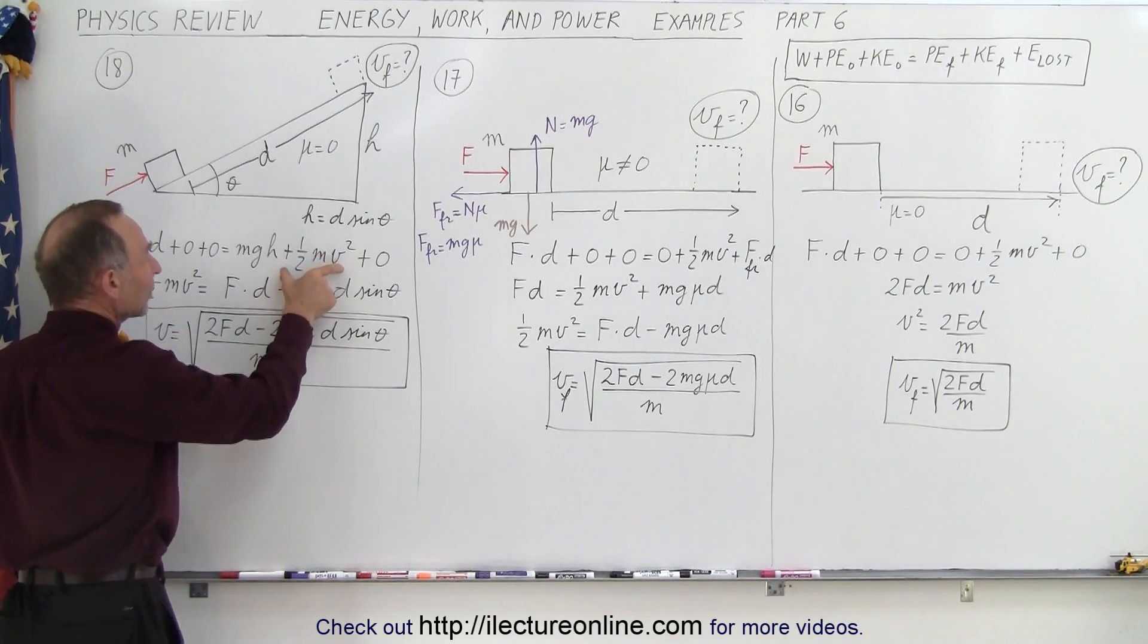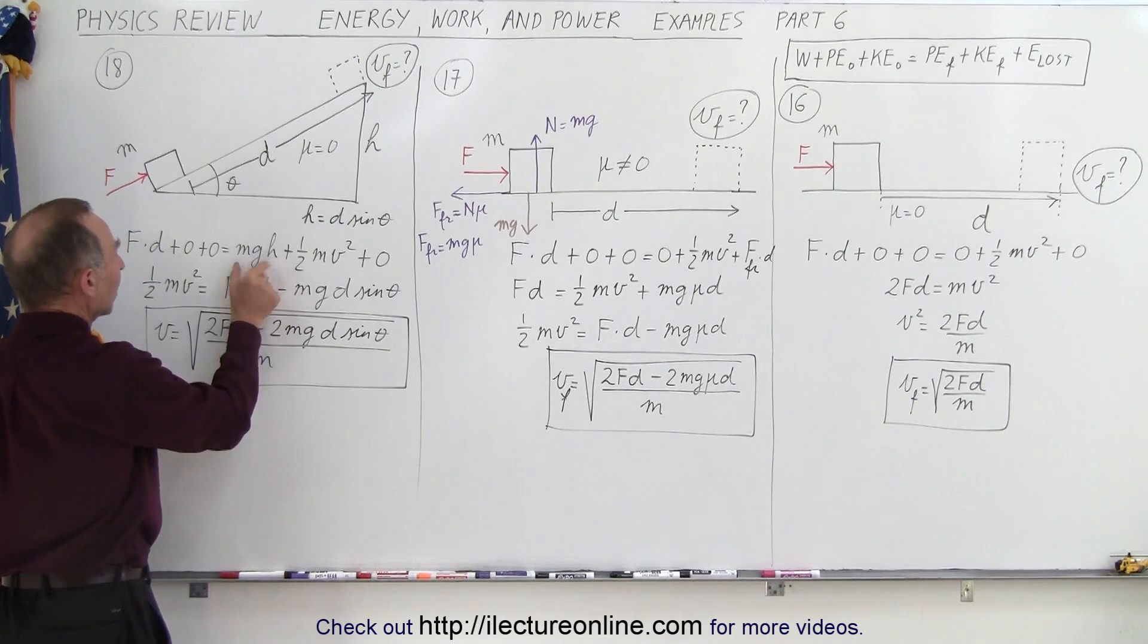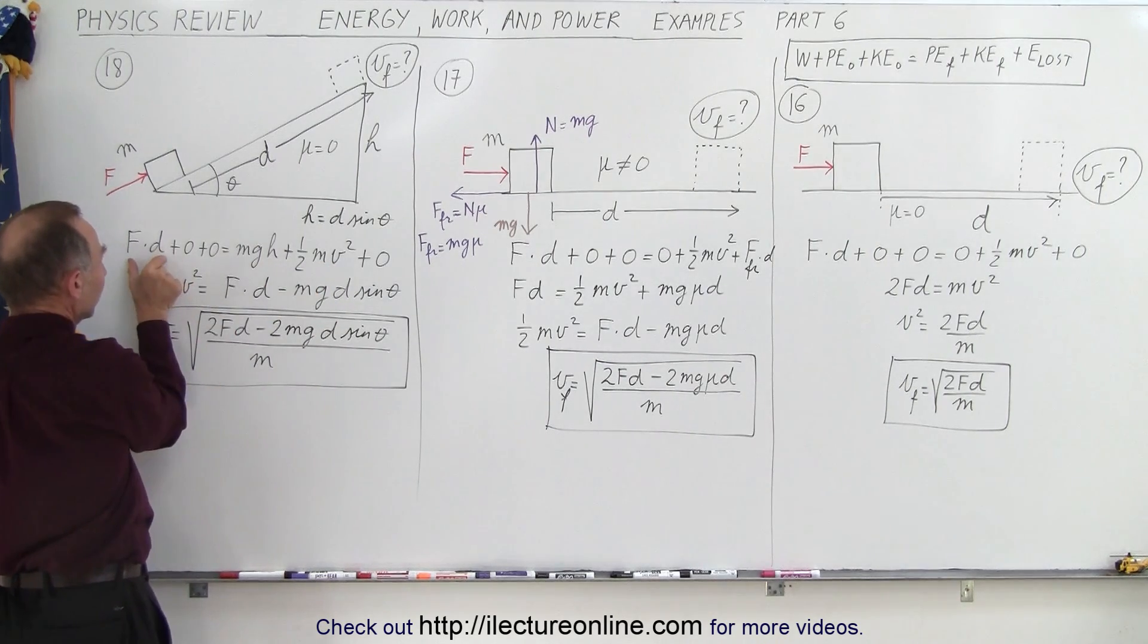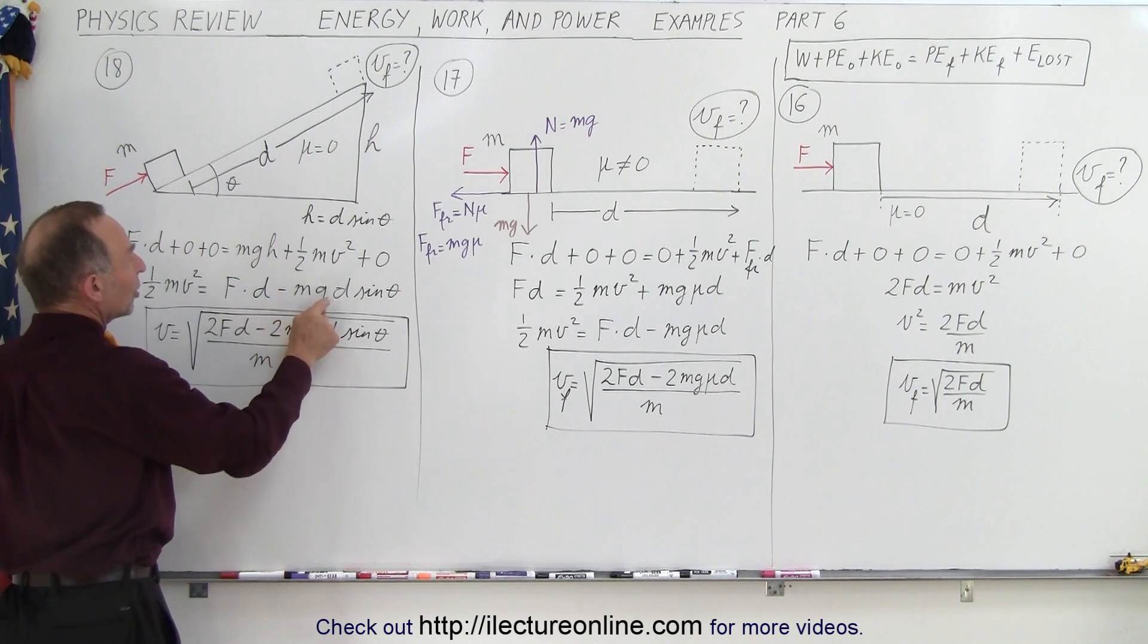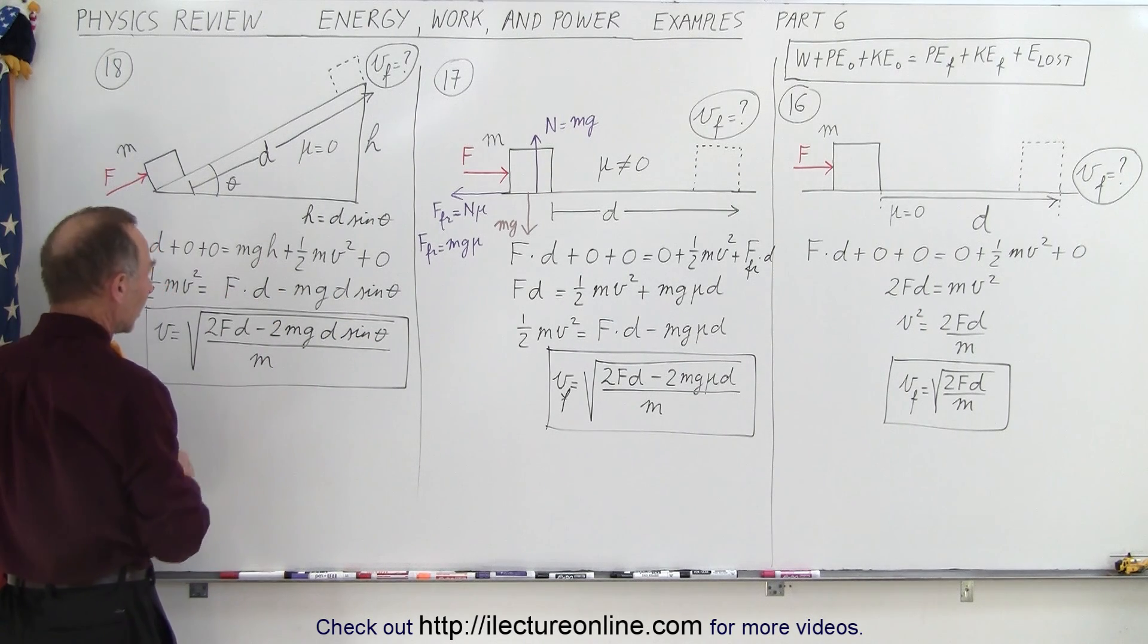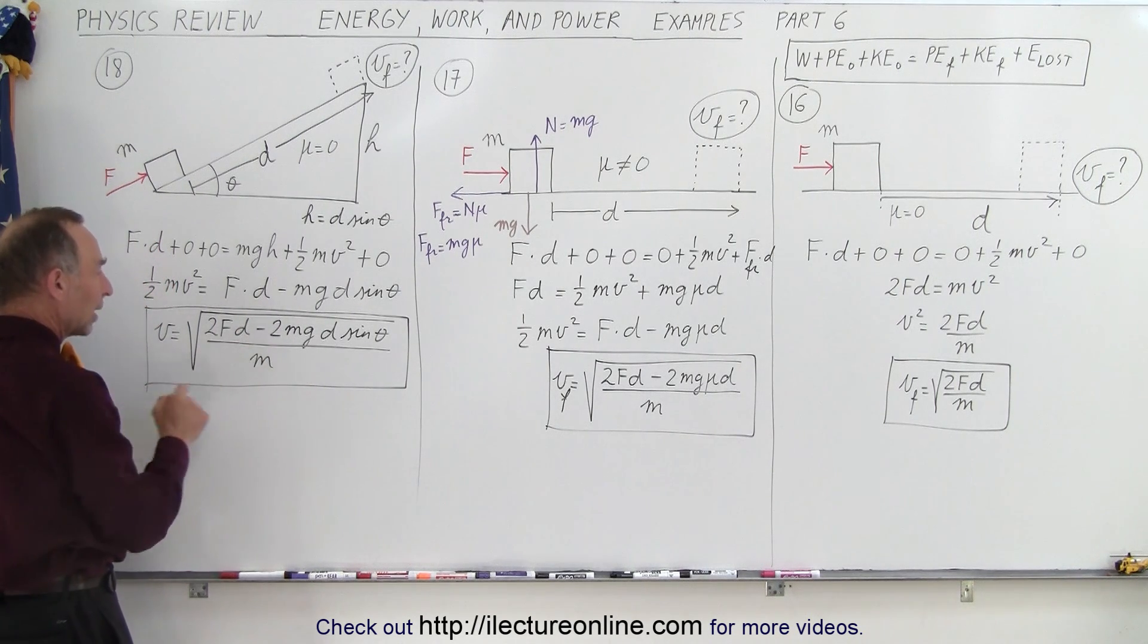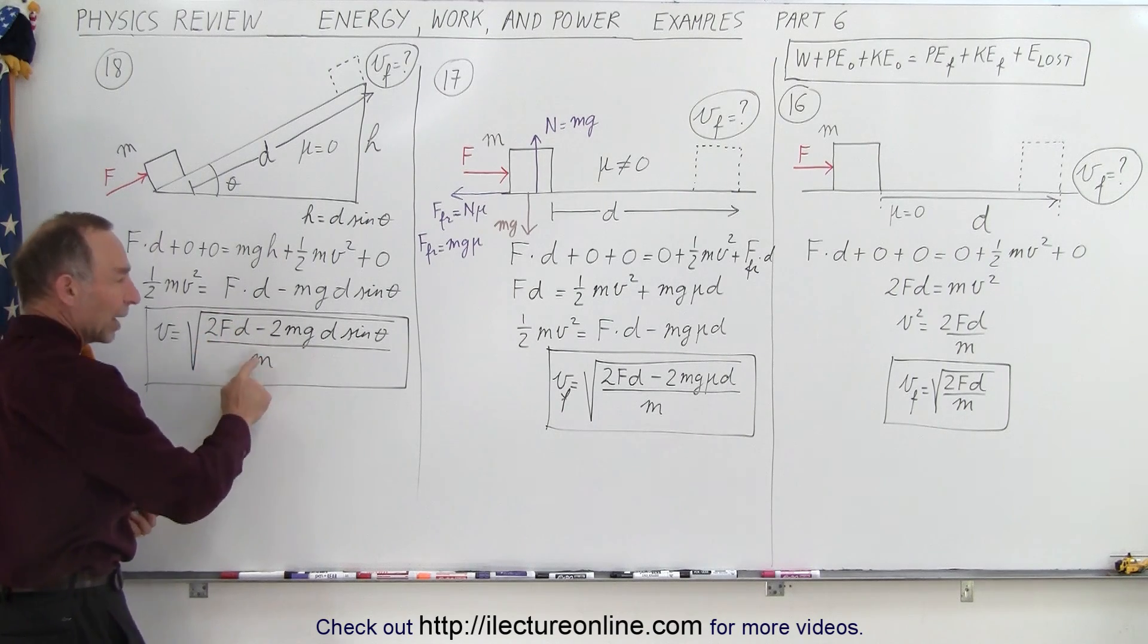So solving for v final, we move mgh to the other side, so now we have one half mv squared equals force times distance minus mgh, which is mg times d sine theta. Multiplying both sides by 2, dividing both sides by m, notice that we end up with this equation right here, and notice that this portion right here is still equal to 2Fd over m,